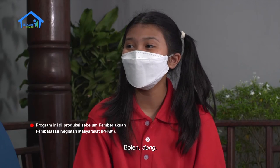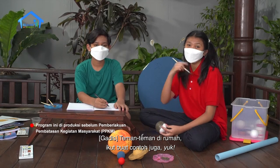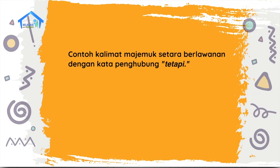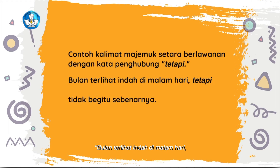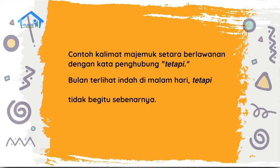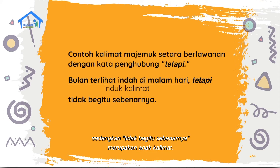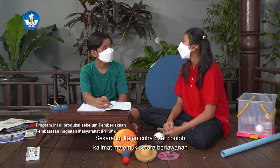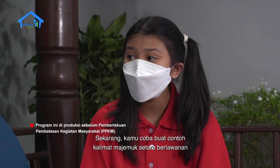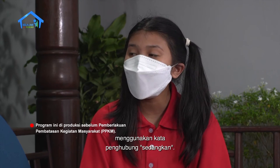Boleh kasih contoh nggak? Boleh dong. Teman-teman di rumah, ikut buat contoh juga yuk. Pertama, aku akan kasih contoh kalimat majemuk setara berlawanan dengan kata penghubung 'tetapi'. Bulan terlihat indah di malam hari, tetapi tidak begitu sebenarnya. 'Bulan terlihat indah di malam hari' merupakan induk kalimat, sedangkan 'tidak begitu sebenarnya' merupakan anak kalimat. Sekarang kamu coba buat contoh kalimat majemuk setara berlawanan menggunakan kata penghubung 'sedangkan'.